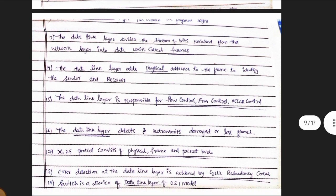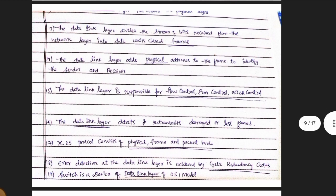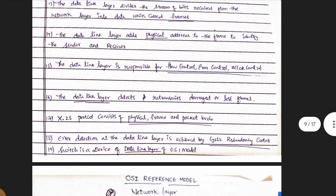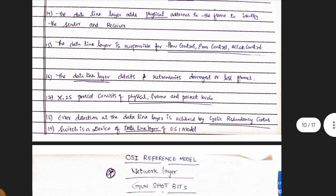The data link layer adds a physical address to the frame to identify the sender and receiver. The data link layer is responsible for flow control, error control, and access control. The data link layer detects and retransmits damaged or lost frames.